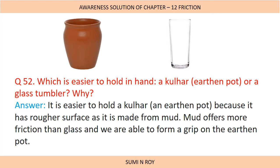Next question: Why is it easier to hold a kulhar — an earthen pot made of mud — than a glass tumbler? It is easier to hold a kulhar because it has a rougher surface as it is made of mud. Mud offers more friction than glass and we are able to form a better grip on the earthen pot. A kulhar made of mud has rough surfaces, and a rough surface has more friction, so the grip can be better.